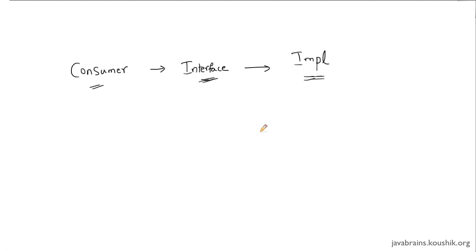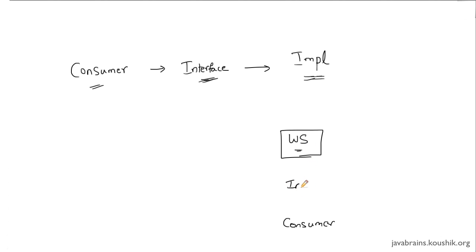Now think about how this would work in the case of a web service. Let's say I have a web service implementation and I want to share the details of this web service to a consumer. Would an interface work? Well, it probably might not work because, as we discussed in the previous tutorial, you don't know what technology this consumer is. It could be a C++ application or it could be a .NET application.